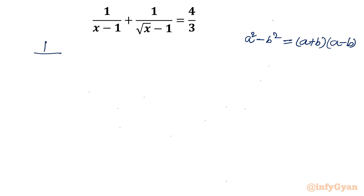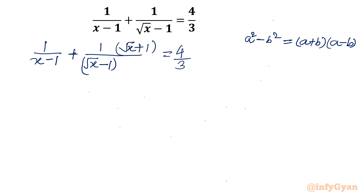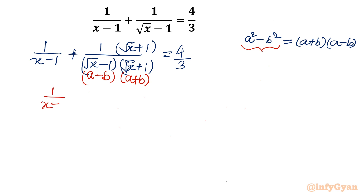Now let us write our LHS: 1 over (x minus 1) plus 1 over (square root of x minus 1). I will multiply this rational term with (root x plus 1) in numerator and denominator. You can see root x plus 1 and root x minus 1 — this is (a plus b) and (a minus b), so the product gives a squared minus b squared, which is x minus 1. Overall we get 1 over (x minus 1) plus (root x plus 1) divided by (x minus 1).